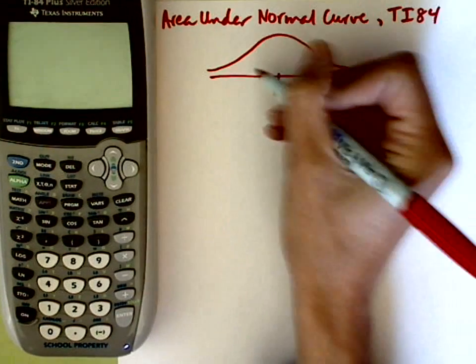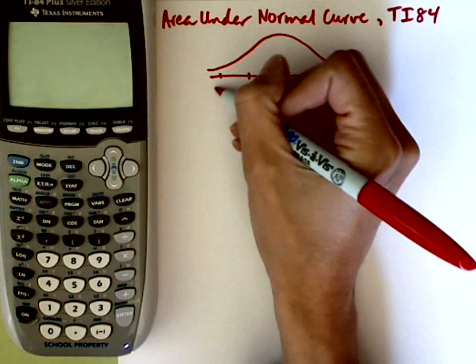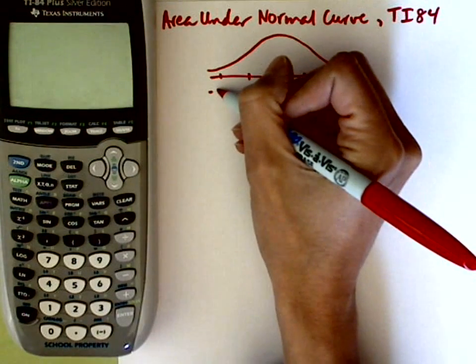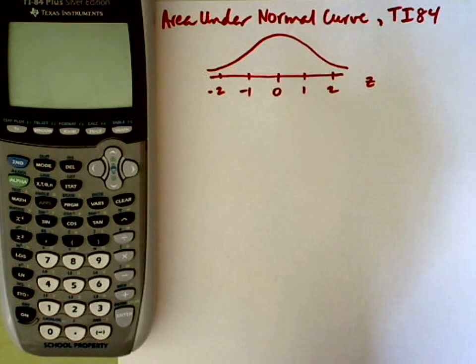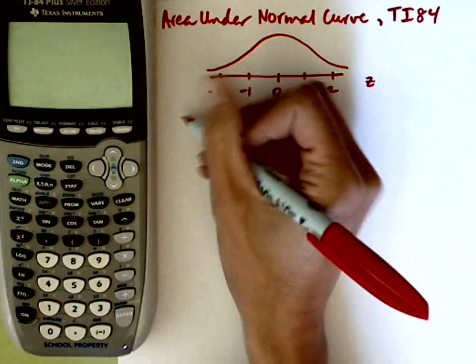I've got positives on the right and negatives on the left. Whenever we're computing areas under the normal curve, whether we're using statistical tables or the calculator, we're always going to be inputting z-scores.